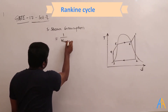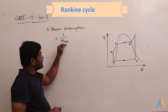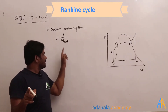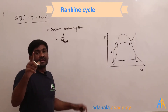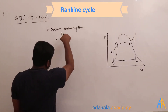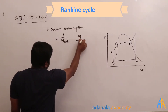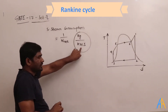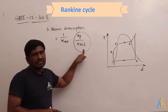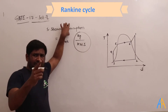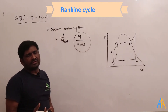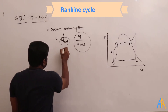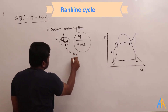What is W_net? Whenever we calculate here, the unit of work is kilojoule per kg. The overall unit of specific steam consumption is kg divided by kilowatt-second. This is very important — if you don't remember this unit, you will make a mistake in the examination. Many people make mistakes only because of this unit.